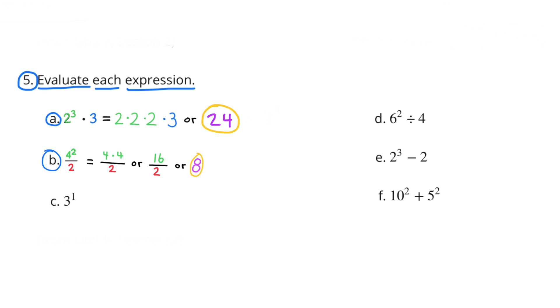Number 5 B. 4 to the 2nd power over 2. That equals 4 times 4 over 2. Or 16 over 2. And 16 over 2 means 16 halves. Or 16 divided by 2. Which equals 8.